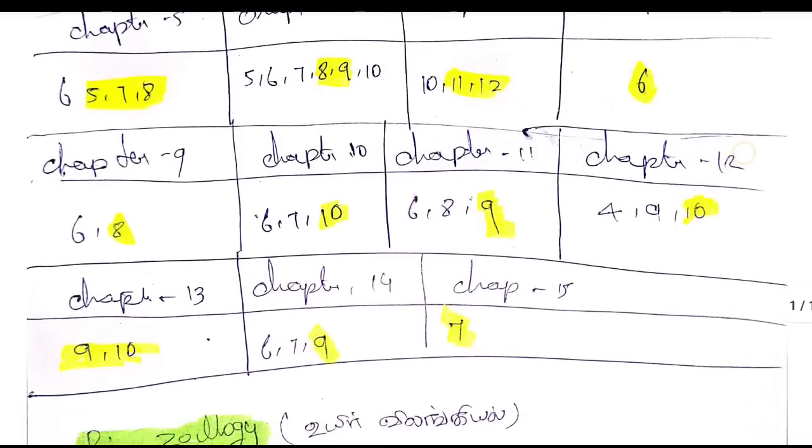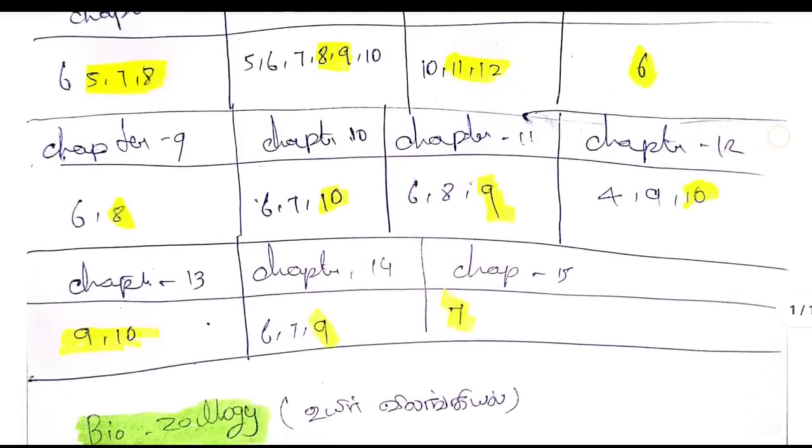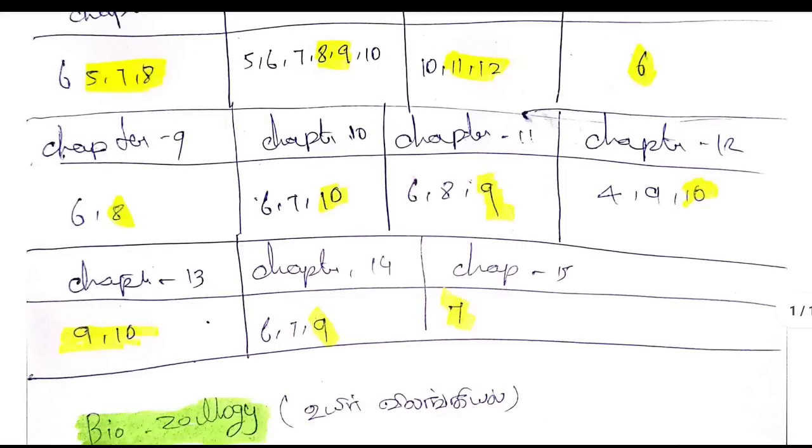Chapter 9: questions 6 and 8 are important. Chapter 10: question numbers 6, 7, and 10 are important.